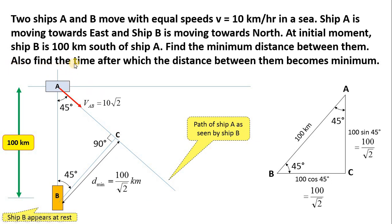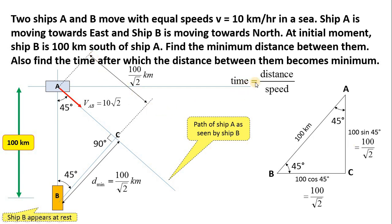The second part asks for the time after which the distance becomes minimum. To calculate time, we need the distance AC that ship A travels to reach point C, which is also 100/√2. Using the formula time = distance / speed: the distance travelled is 100/√2 and the speed of ship A with respect to B is 10√2 km/h. Dividing these gives the answer of 5 hours. So 5 hours is the time taken after which the distance between them becomes minimum.